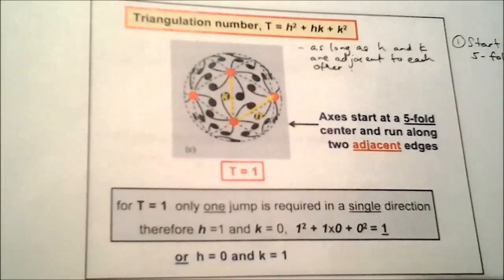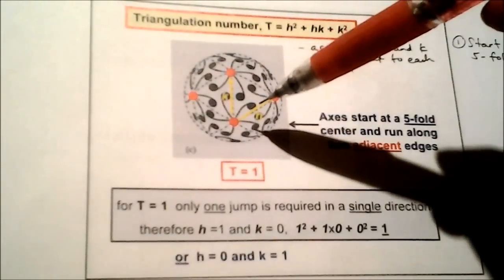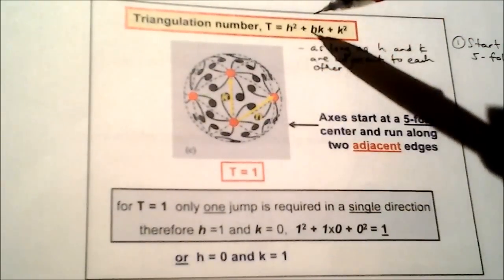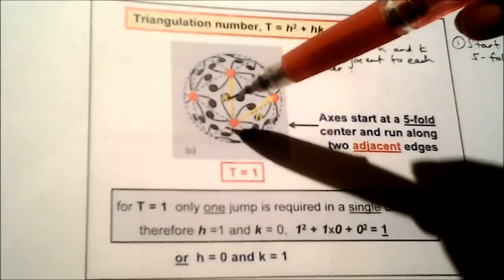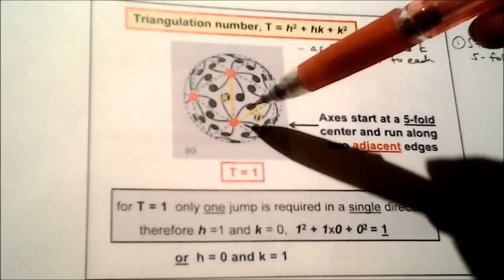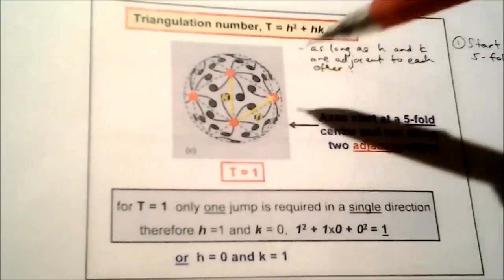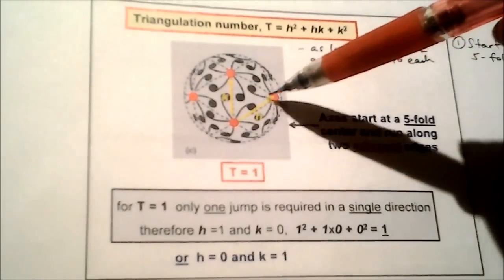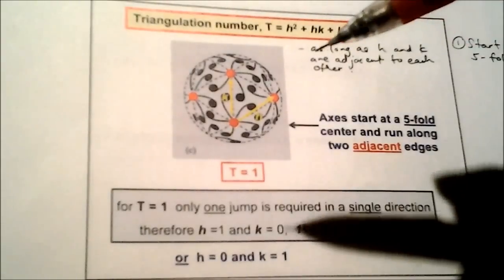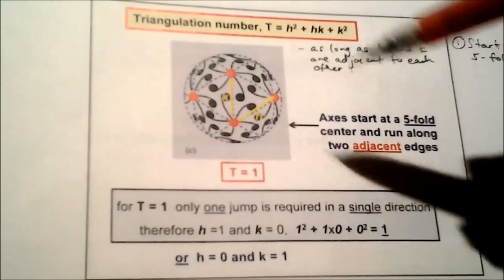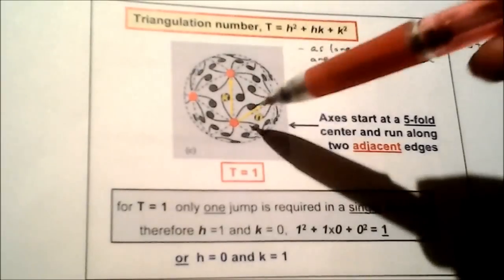For this example, it's T=1, so it's pretty simple. First of all, you need to find the value of h and k to be substituted into this formula. In this example, let's say we're calculating from this point to this point. h is pointed in this direction and k is pointed in this direction. You can designate any point as your h and k as long as they're adjacent to one another.